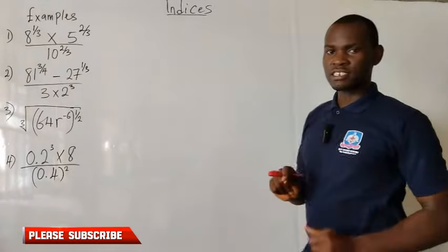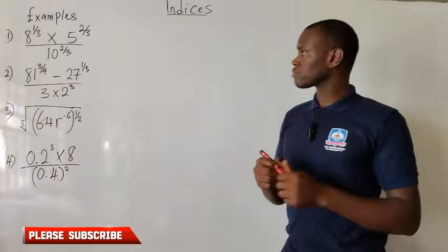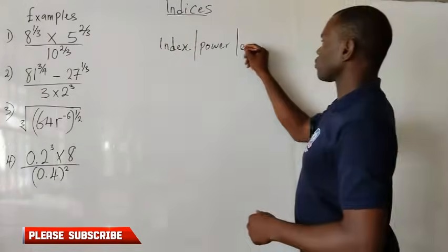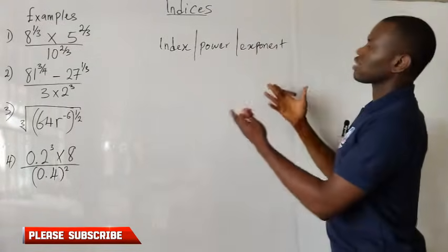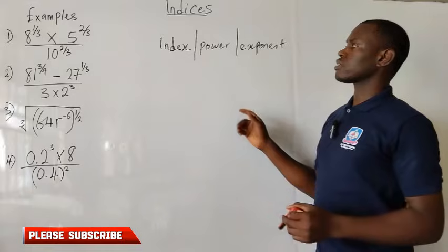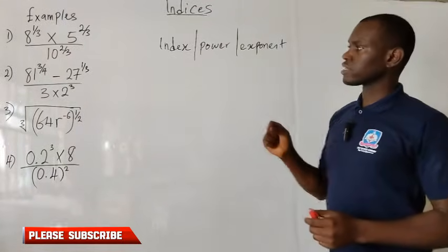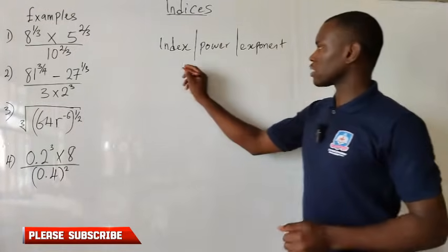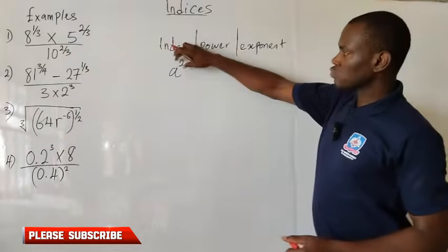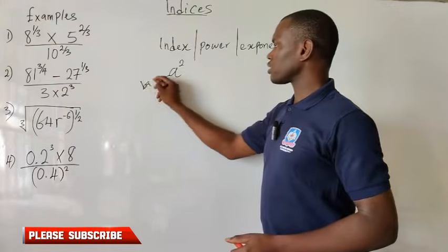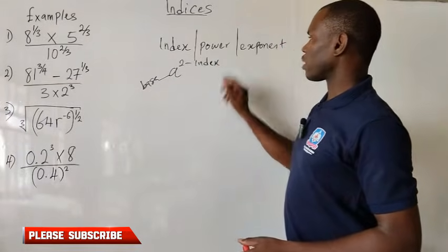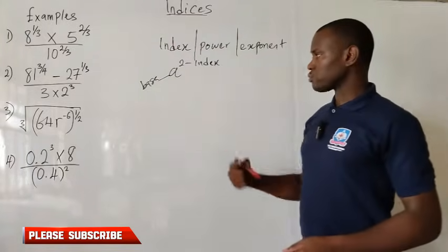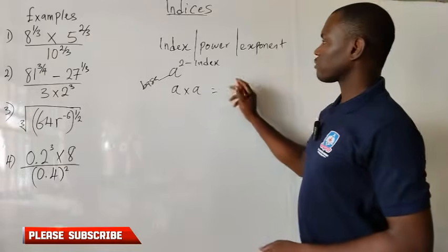So what is indices? Indices is the plural form of the word index. Another word for index is power or exponent. These are words we can use interchangeably, referring to the same thing. Index shows the number of times a number can multiply itself to obtain a product. For instance, I have a raised to the power of 2. The 2 is the index and a is the base.